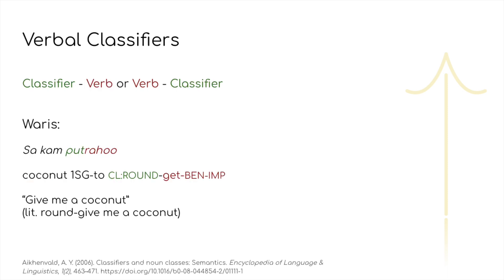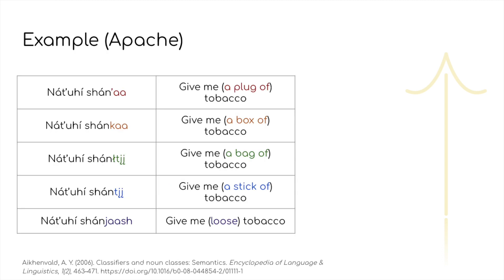Verbal classifiers, as evident from the name, are classificatory verbal elements that most often encode the shape, form, animacy, and other related categories of the subject or direct object. This sort of system can be found in many Athabascan languages, which possess a whole host of these different verbal classifiers.